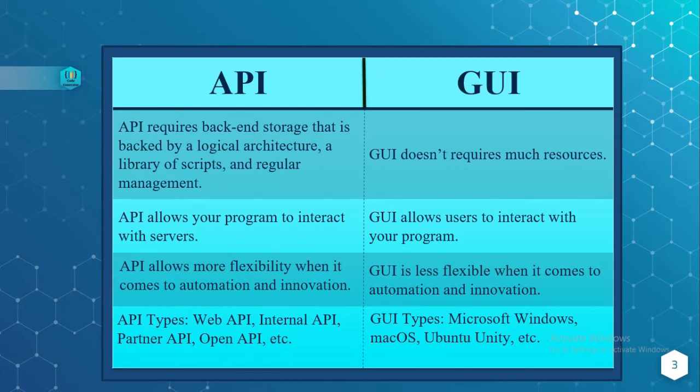There are many types of APIs: Web API, Internal API, Partner API, and Open Source API. Whereas the GUI types are Microsoft Windows, Mac OS, Ubuntu, Unity, and others.